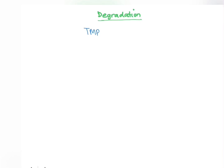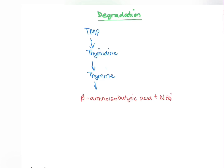TMP undergoes a similar degradation reaction. TMP is converted to thymidine, which also requires a nucleotidase enzyme. Thymidine is then converted to beta-aminoisobutyric acid. During this process, ammonia and carbon dioxide are also formed. This molecule is converted to succinyl-CoA, which is also used in the citric acid cycle.